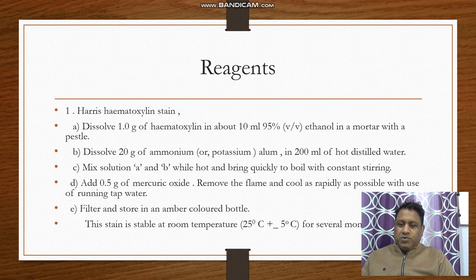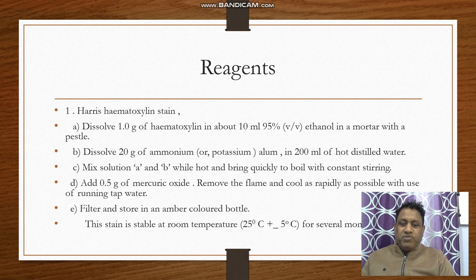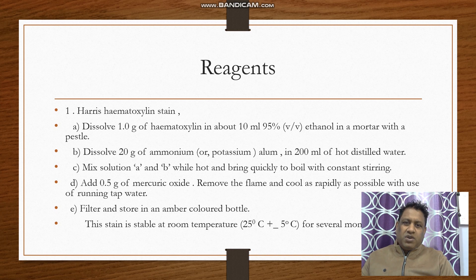Hematoxylin reagent preparation: Dissolve 1 gram of hematoxylin in about 10 ml of 95% ethanol in a mortar with a pestle. Dissolve 20 grams of ammonia or potassium alum in 200 ml of hot distilled water. Mix solutions A and B while hot and bring quickly to boil with constant stirring. Add 0.5 gram of mercuric oxide. Remove from flame and cool rapidly using running tap water. Filter and store in an amber colored bottle, as hematoxylin reacts with light. The stain is stable at room temperature (25°C ± 5°C) for several months.